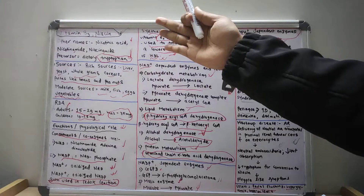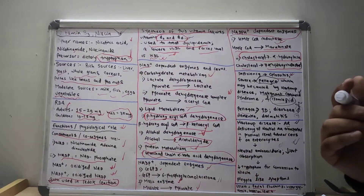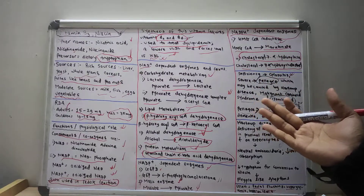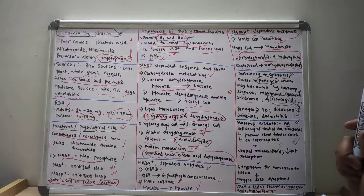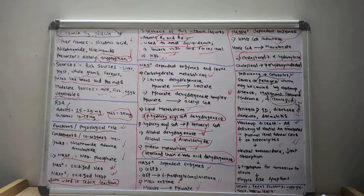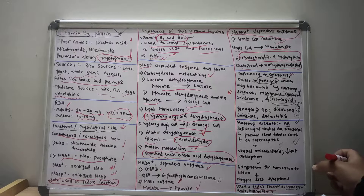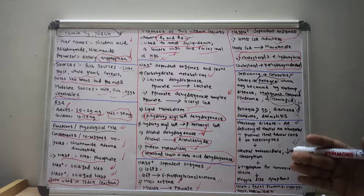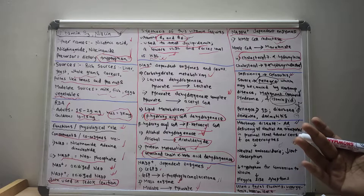To summarize, we discussed vitamin B3 including its introduction, sources, recommended daily allowances, physiological roles, NAD plus and NADP plus dependent enzymes and reactions, deficiency manifestations including pellagra, Hartnup disease, malignant carcinoid syndrome, and symptoms of excess vitamin B3. I hope you understood and enjoyed this lecture. In subsequent videos I will discuss vitamin B5, B6, and so on. Thank you.